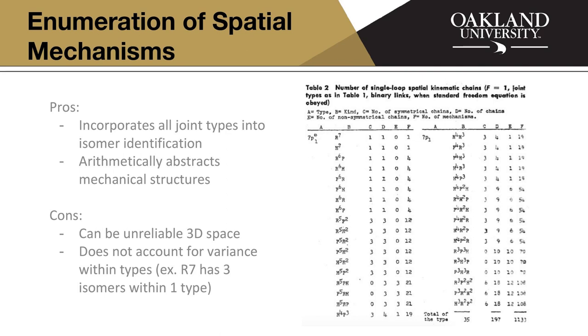And then in this Freudenstein paper, they come up with four single loop spatial kinematic chain with binary links. So it's a very specific type of mechanism, right? They come up with over 1100 different variants from this equation. And these are all isomers, like these are all unique solutions. So this again can be applied to a lot more different types of complex, different mechanisms of different complexities.